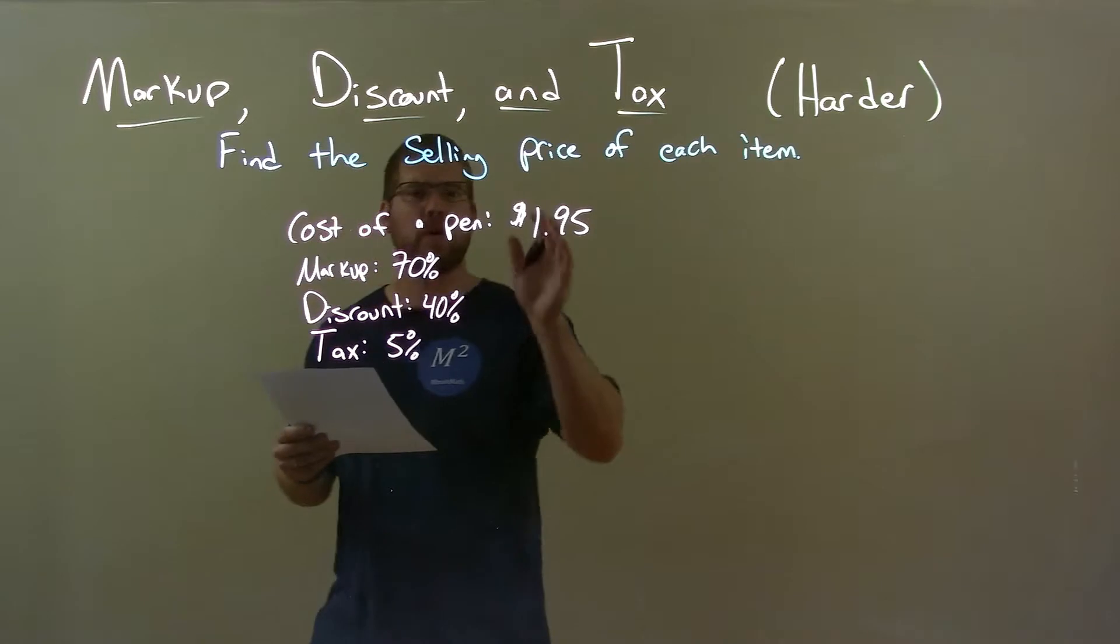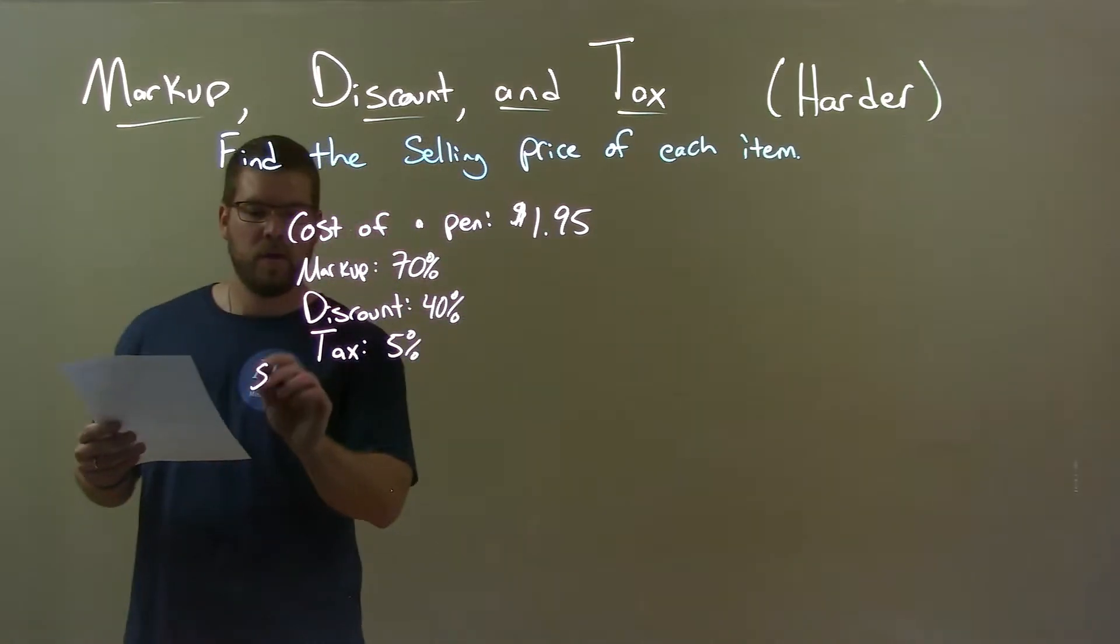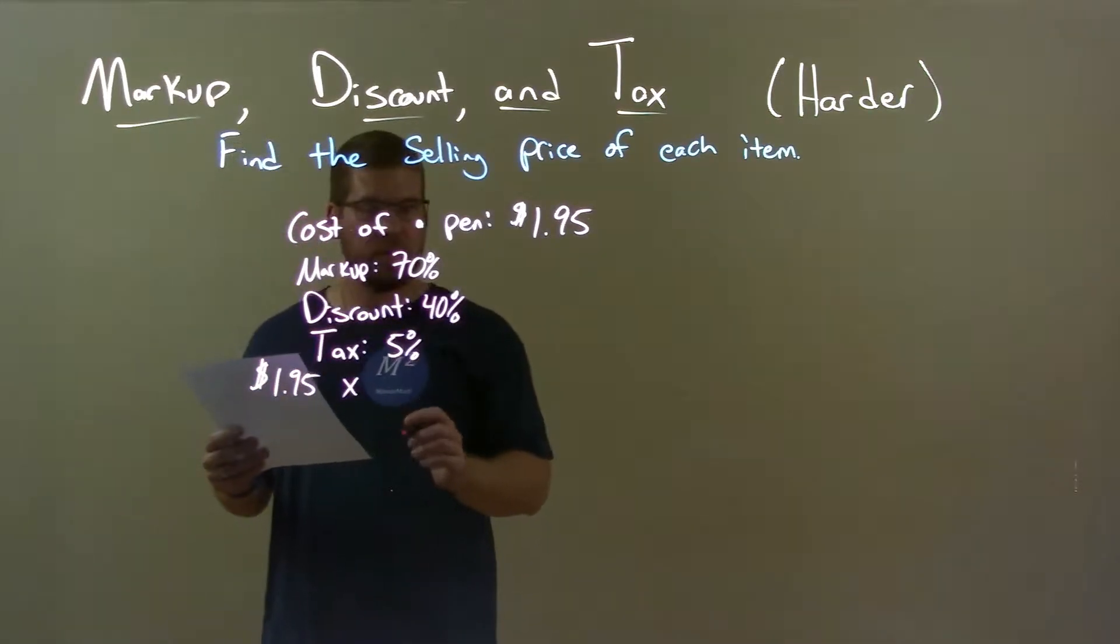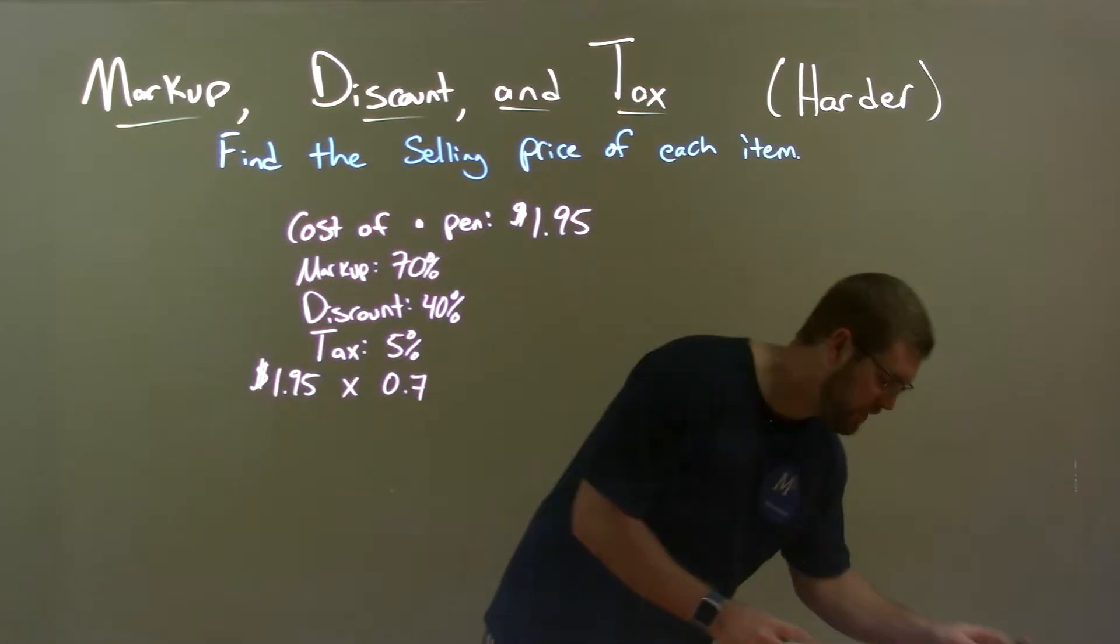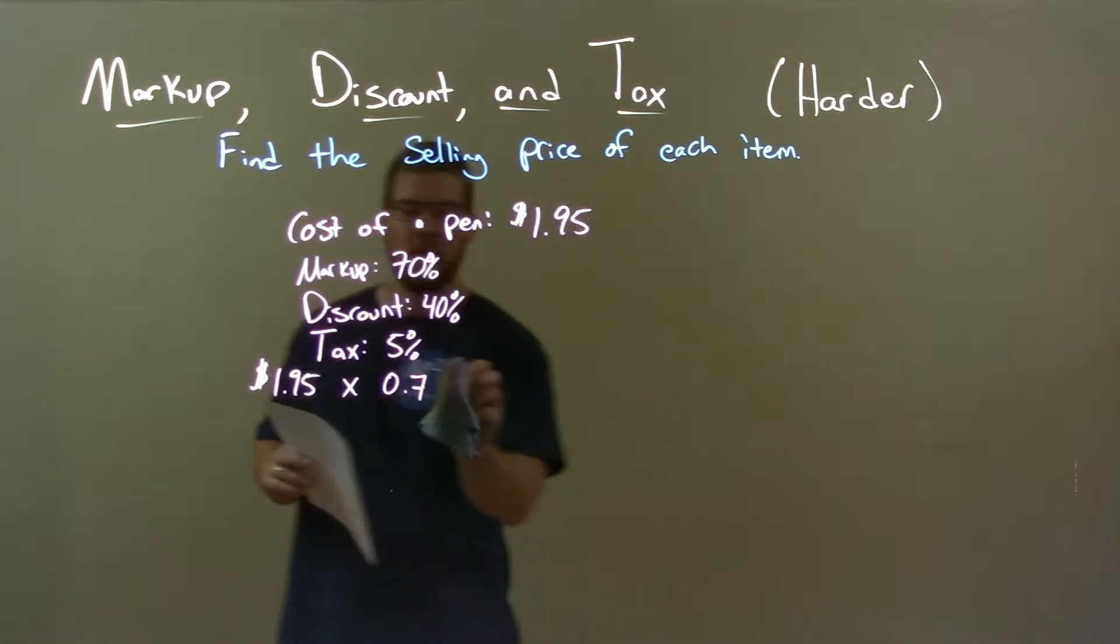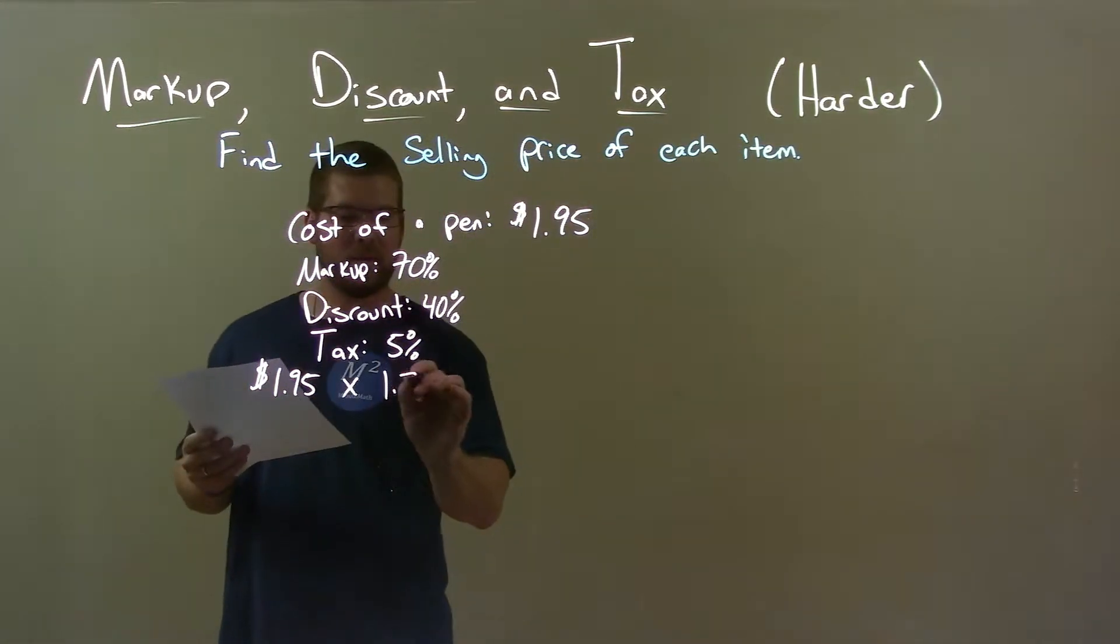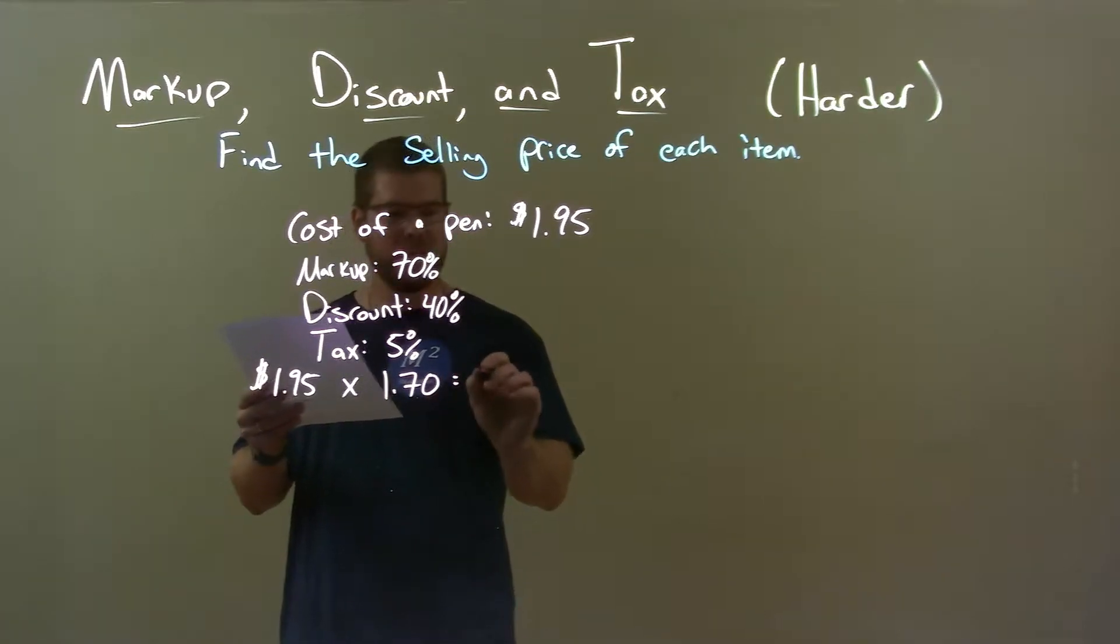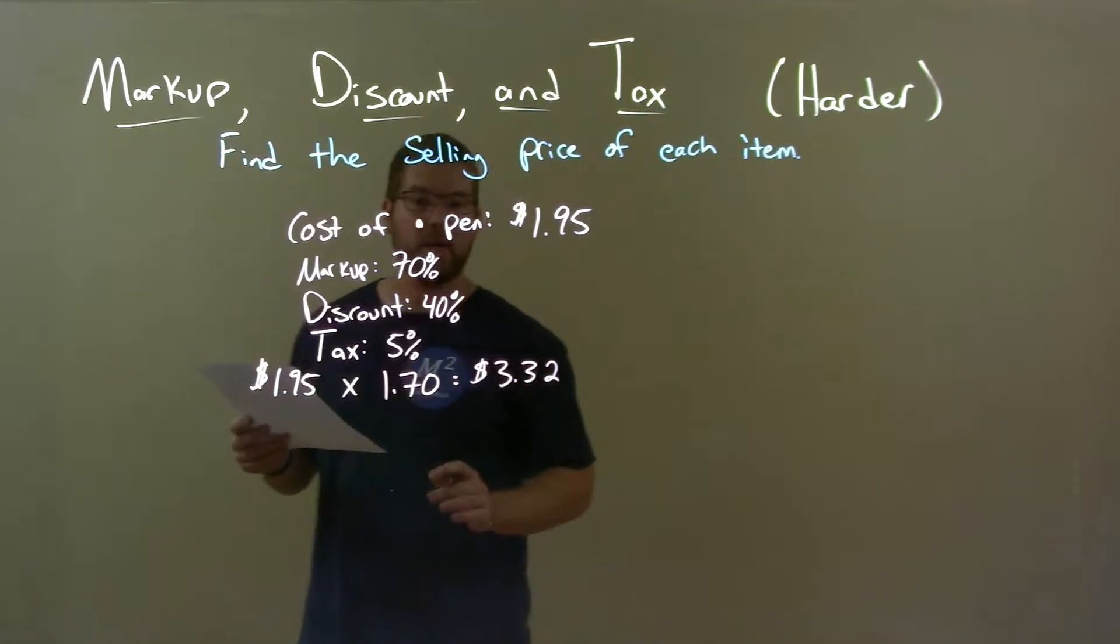Well, first we start with the cost of the pen, right? And we apply a 70% markup. So, we take the $1.95 and multiply that by 70% markup as a decimal, 0.7. I'm sorry, not 0.7. 1.7. I got ahead of myself. Markup here. Markup of 1.7. Or 170%, right? That comes out to be $3.32. Now, here's a quick learning lesson.